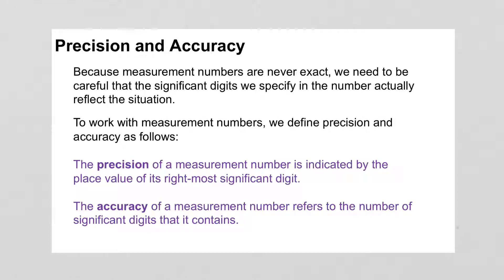Precision and accuracy. If you haven't dealt with these before, you'd probably say they're the same thing, but they're not in technical terms. The precision of a measurement number is indicated by the place value of its rightmost significant digit — place value being thousands, tens, ones, tenths, hundredths, thousandths, for example. The accuracy of a measurement number refers to the number of significant digits it contains. A helpful memory tip: precision deals with place value — they both start with P — and accuracy deals with significant digits.